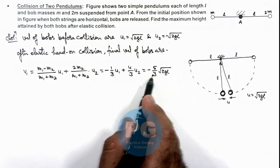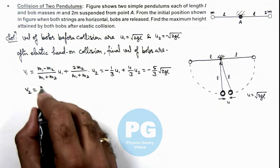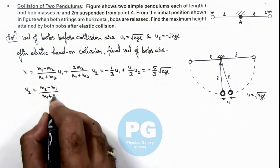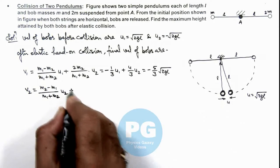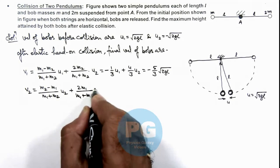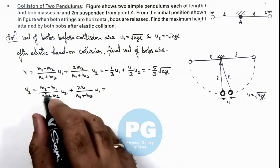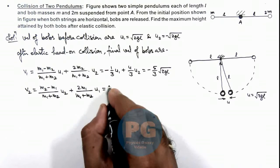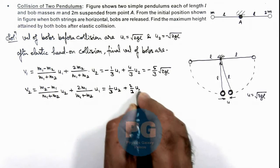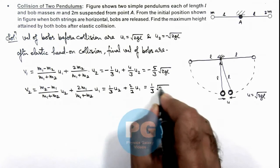Similarly we can find out the velocity of second bob which is given by the result m2 minus m1 upon m1 plus m2, u2 plus 2m1 upon m1 plus m2 into u1. On substituting the values, m2 as 2m and m1 as m, this will give us 1 by 3 u times root 2gl.